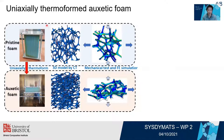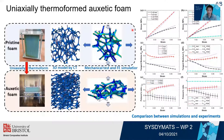We used a high-resolution CT scan method to obtain the inner structure of the pristine and auxetic foams and studied the topological characteristics of these materials. We then built an FE model based on the CT scan results, and it was found that the simulation results show quite good agreement with the experimental results. Both the pristine and the conventional foams show higher modulus under tension than under compression.